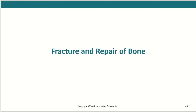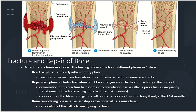Now we're going to look at the process of fracture and repair to bone. This process has three phases with four steps. A fracture is simply a break in the bone. The first phase is the reactive phase — the early inflammatory phase — when fracture repair involves the formation of a clot called a fracture hematoma. This takes about six to eight hours to form after the initial bone break.